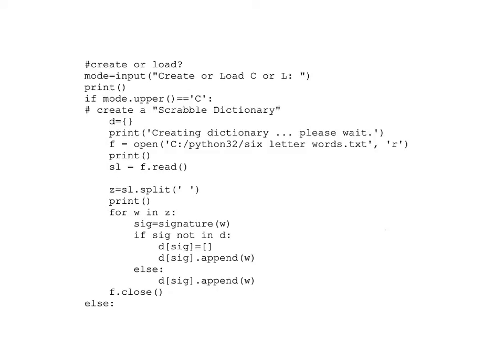When we start, what we want to do is create the dictionary, so having one long string isn't going to help us very much. We want to take that string and split it up into individual six-letter words and put those into a list. There's a function that works on strings called 'split', and the output of the split function is going to be a list of the words. We pass as a parameter what the separator is between the words in the original string.